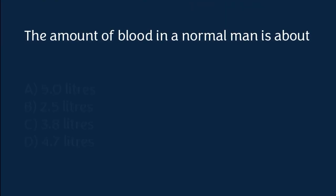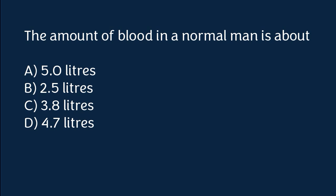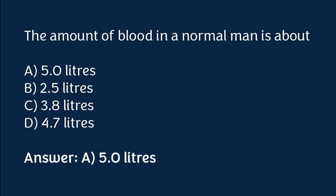The amount of blood in a normal man is about: 5 liters, 2.5 liters, 3.8 liters, or 4.7 liters. The correct answer is option A. The amount of blood in a normal man is about 5 liters.